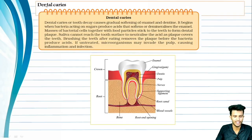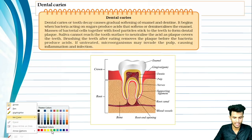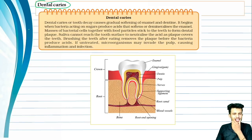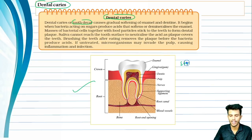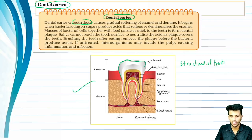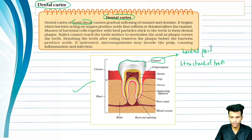Now our next small topic is dental caries. It is often said to brush your teeth in the morning, otherwise tooth decay will occur — and that decay is dental caries. Here we can see the structure of a tooth. The outer layer is enamel, which is the hardest part of our body. Below the enamel is a layer called dentine.